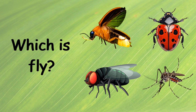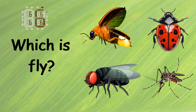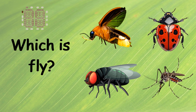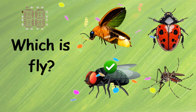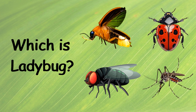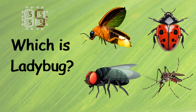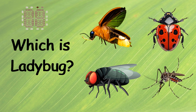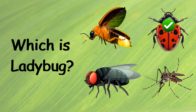Which is Fly? Ten, nine, eight, seven, six, five, four, three, two, one, zero. Ten, nine, eight, seven, six, five, four, three, two, one, zero. This is the right one.